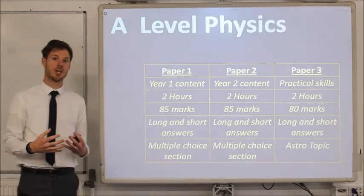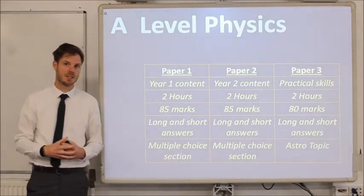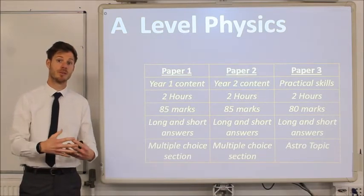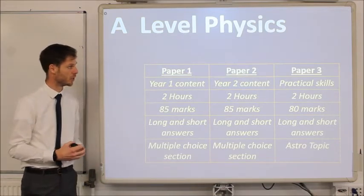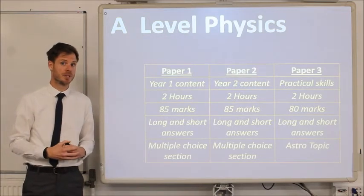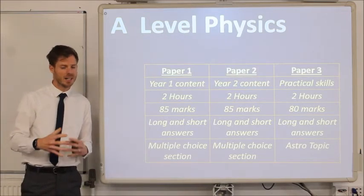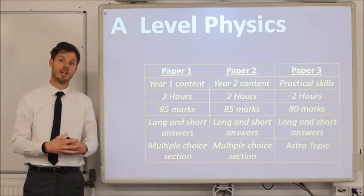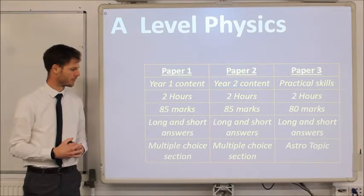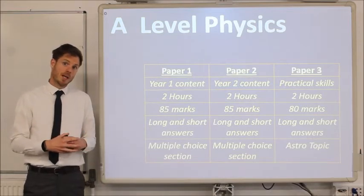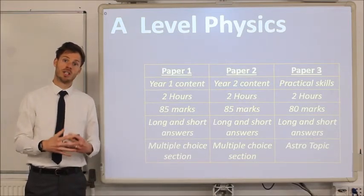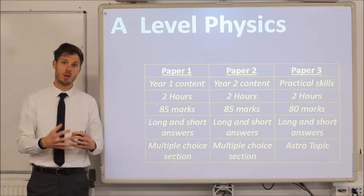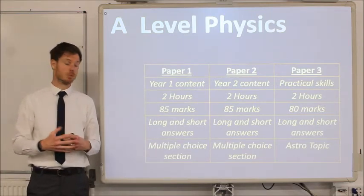So after the two years, you'll be expected to sit three papers. We don't do ASs here at the Griffin School, so everything will be assessed at the end of year two. There are three papers, each two hours long, and roughly about the same amount of marks. 85 marks for paper one and two, and 80 marks for paper three. All three papers are a combination of long and short answers, with papers one and two having a multiple choice section in them as well.